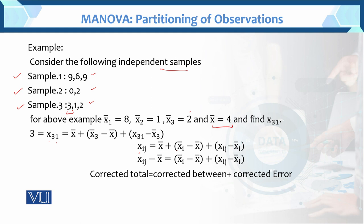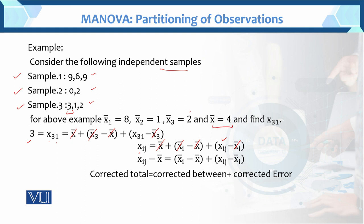If you open and expand this expression, the minus x̄ cancels out with the plus x̄, so what remains is xᵢⱼ. Similarly, for x₃₁ which equals 3: we write x̄, plus x̄₃ minus x̄, plus x₃₁ minus x̄₃. When cancelled, plus x̄ and minus x̄ cancel, leaving x₃₁. Let's solve this further.